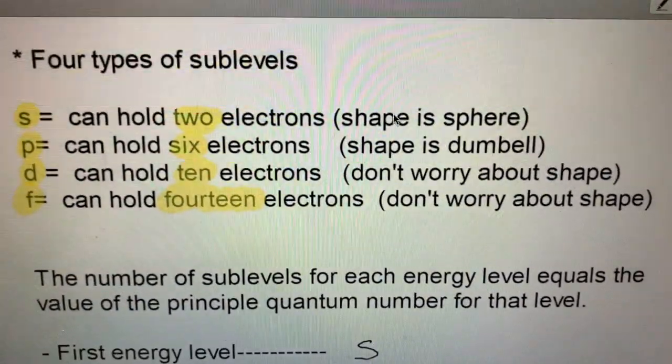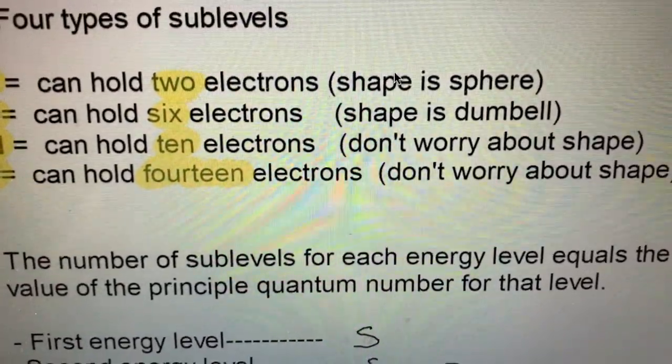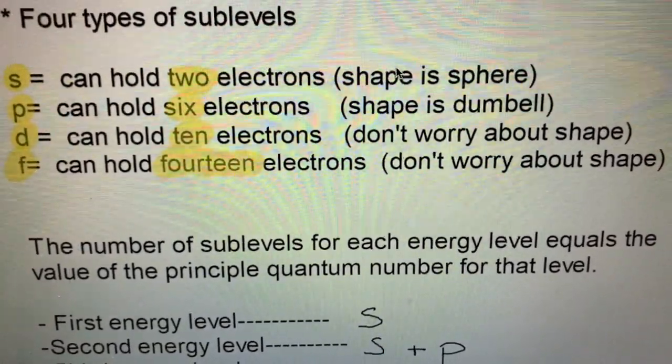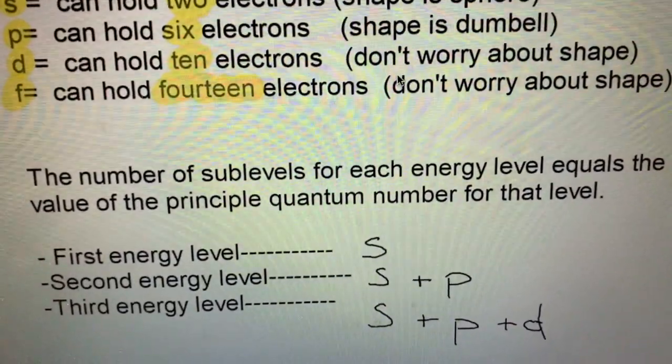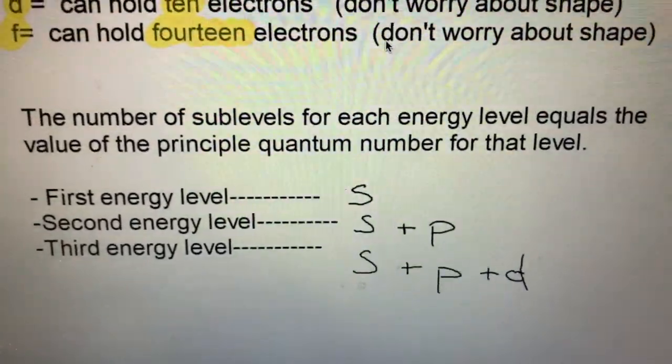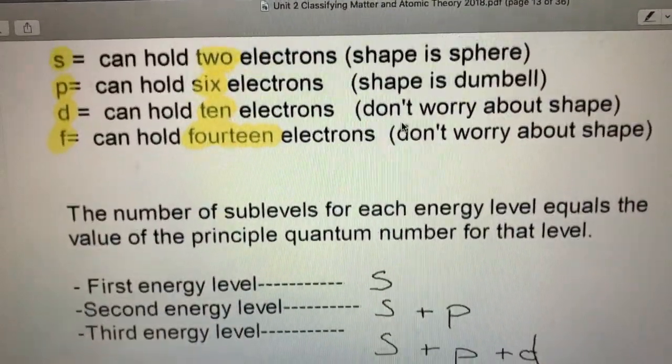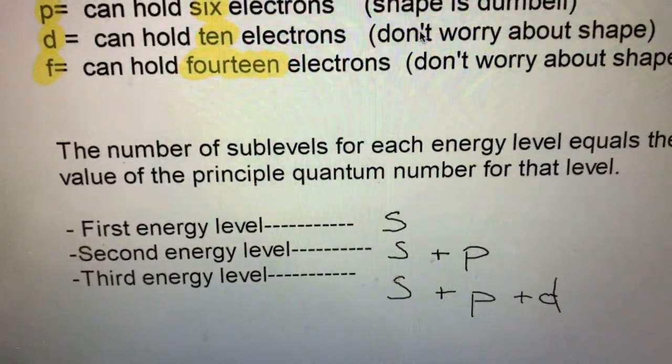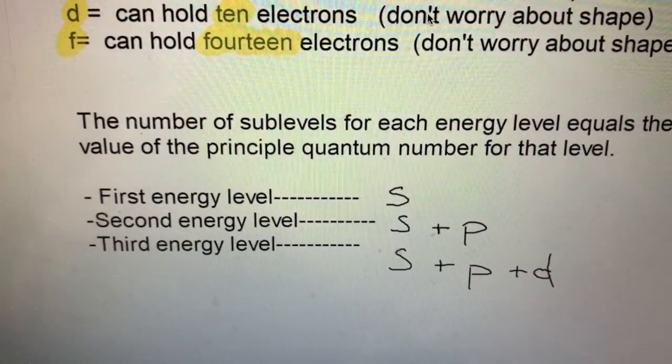A little bit more math. The number of sublevels for each energy level equals the value of the principal quantum number for that level. In your first energy level, you can only have one sublevel, and that sublevel is s. The second energy level can have two sublevels, and that's going to be s and p. The third energy level can have three sublevels: s, p, and d. Now to go back to that equation, the maximum number of electrons in the first energy level was two. It only has an s sublevel and s can only have two, so that makes sense. That second energy level can have eight electrons. s is two, p is six, two plus six is eight. Hopefully you're seeing the pattern.